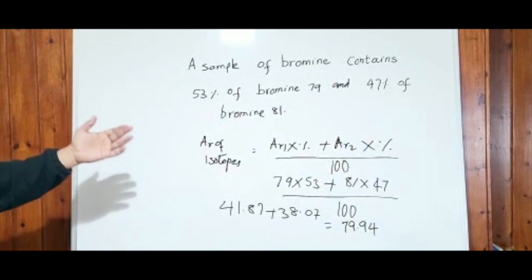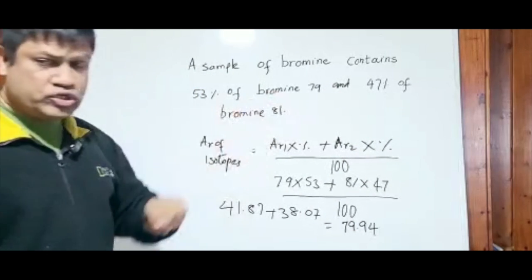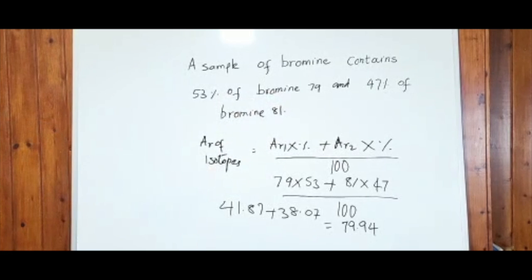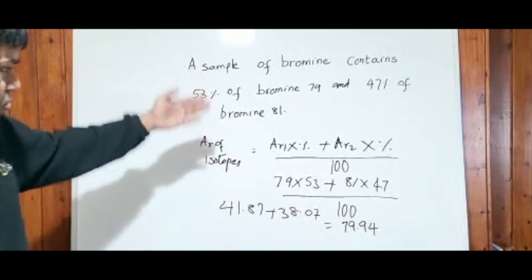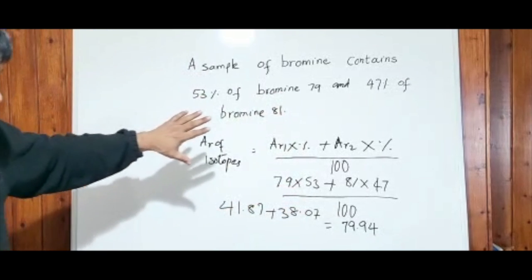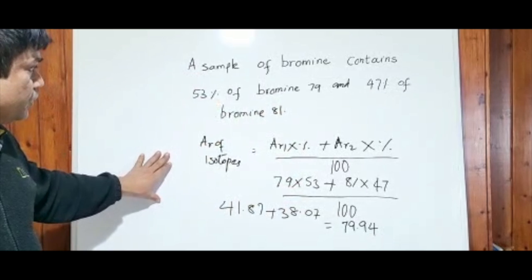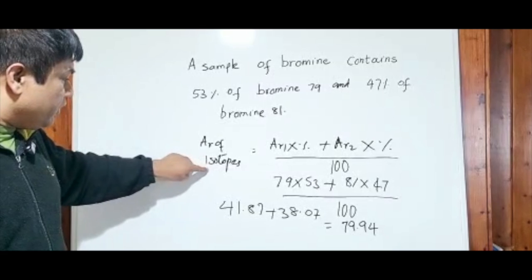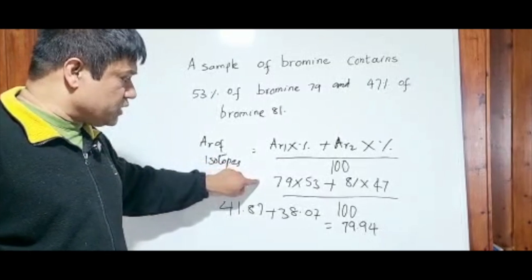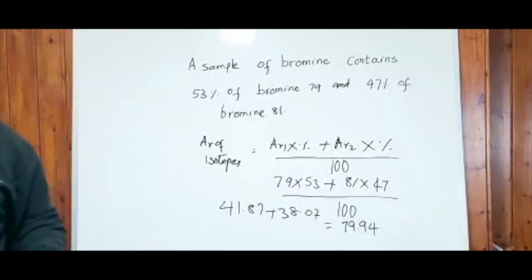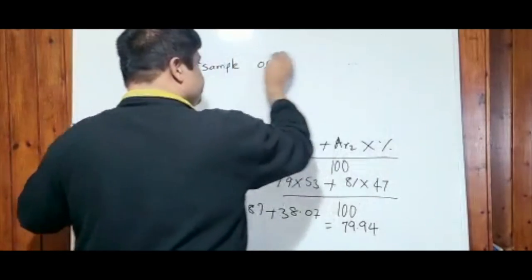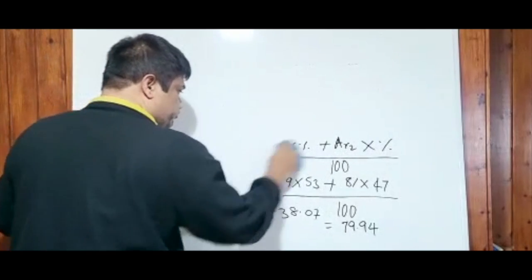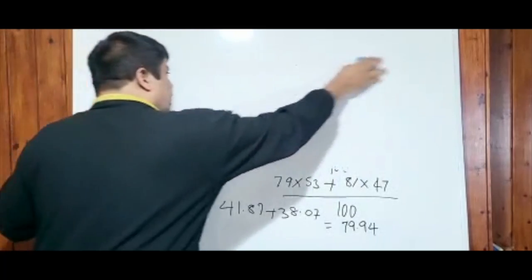Let's try one more example. This is another way questions are asked in examinations — common for GCSE and A-level. The harder way is when they give you the relative isotopic atomic mass and ask you to figure out the percentages. They do not give you the percentages; you have to work them out. I've seen this question in many past papers for A-level.